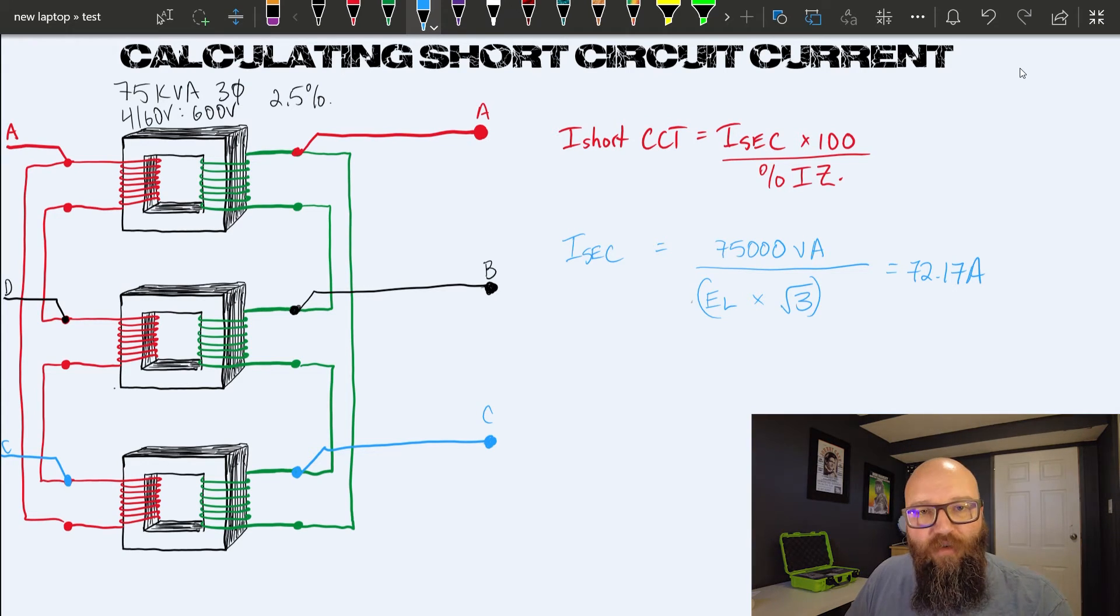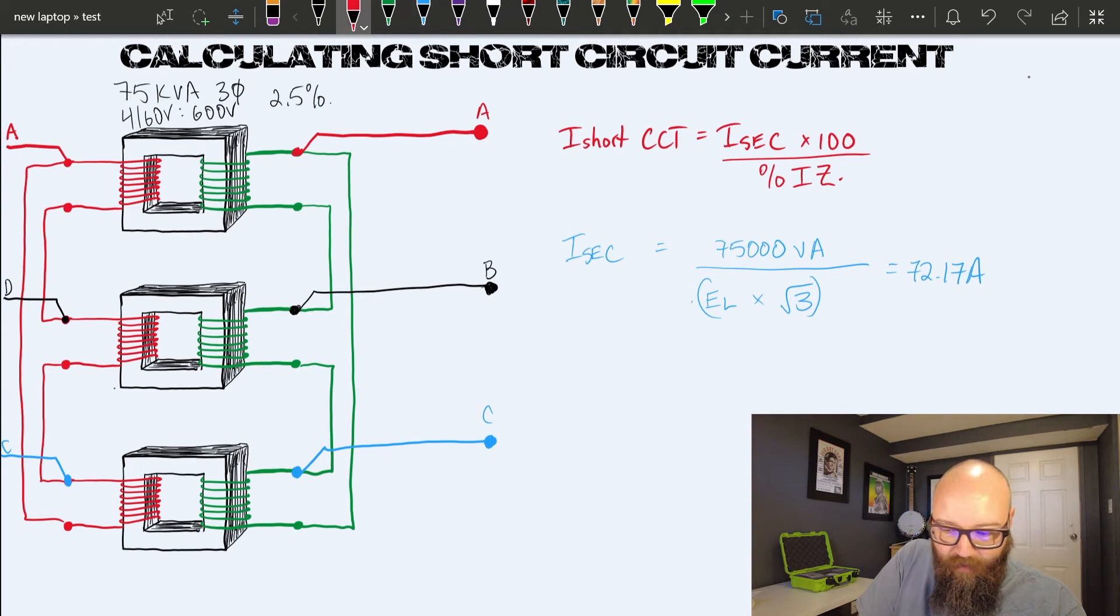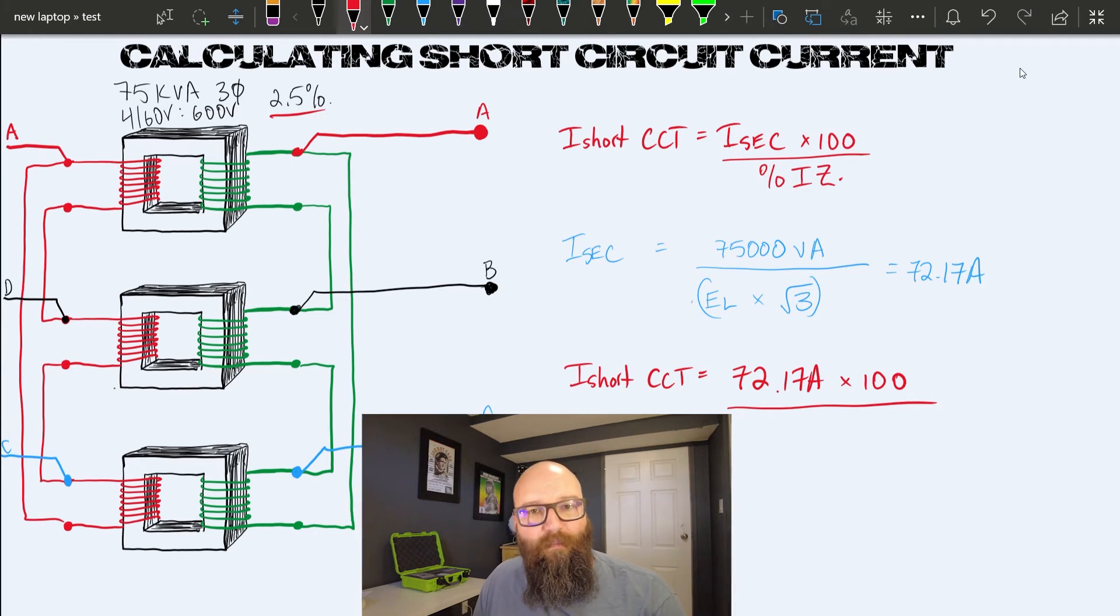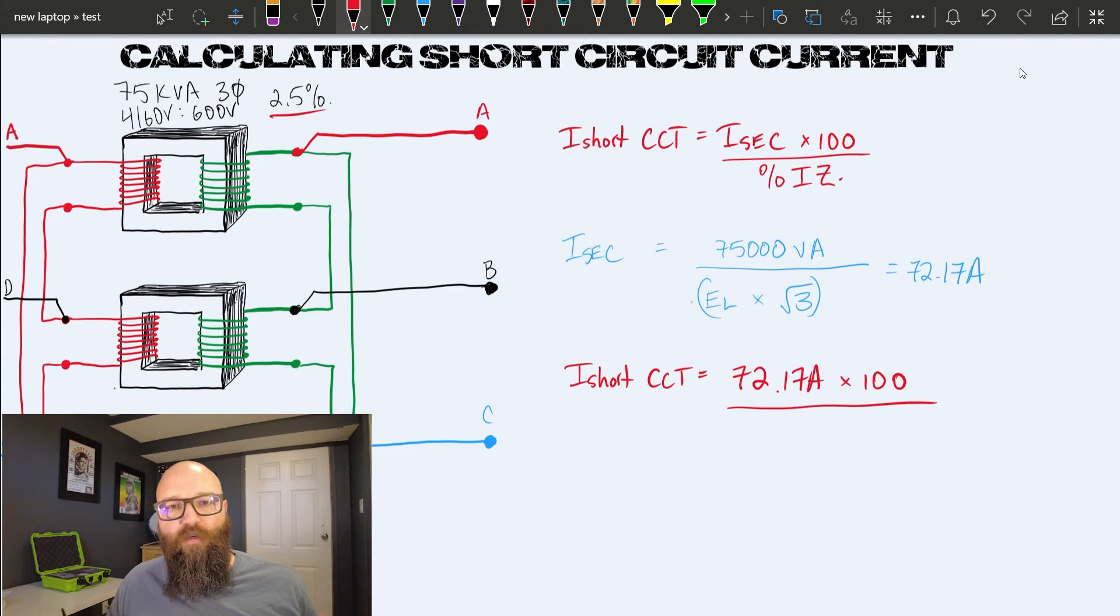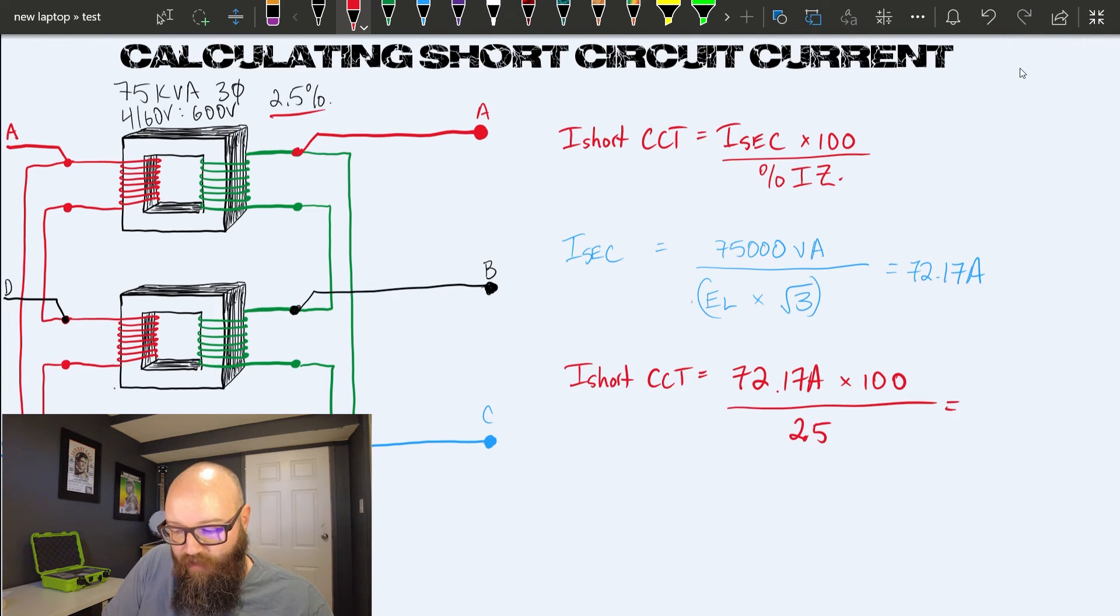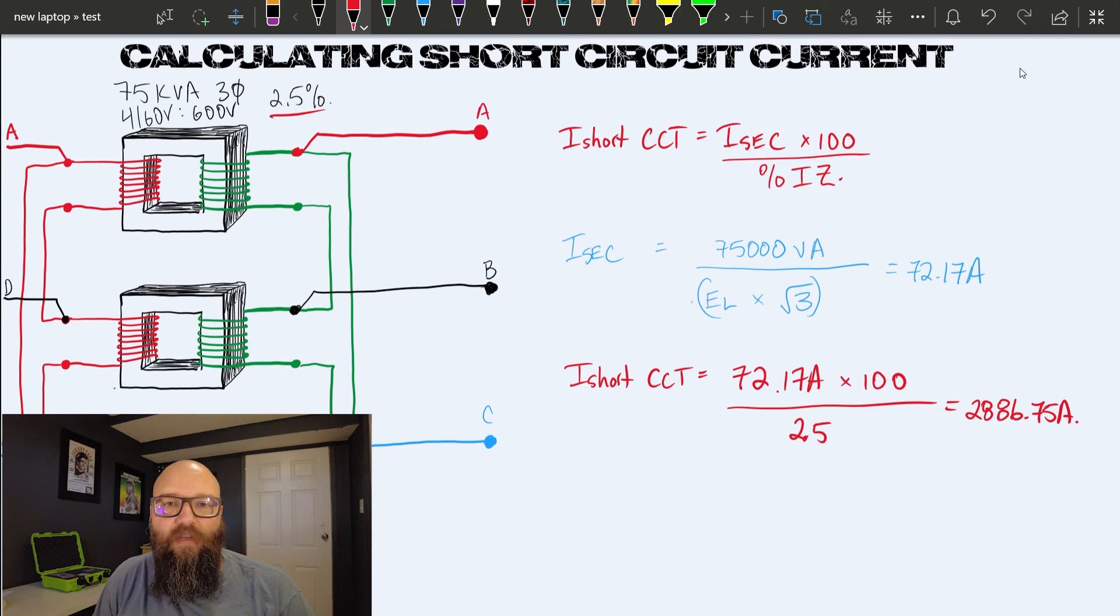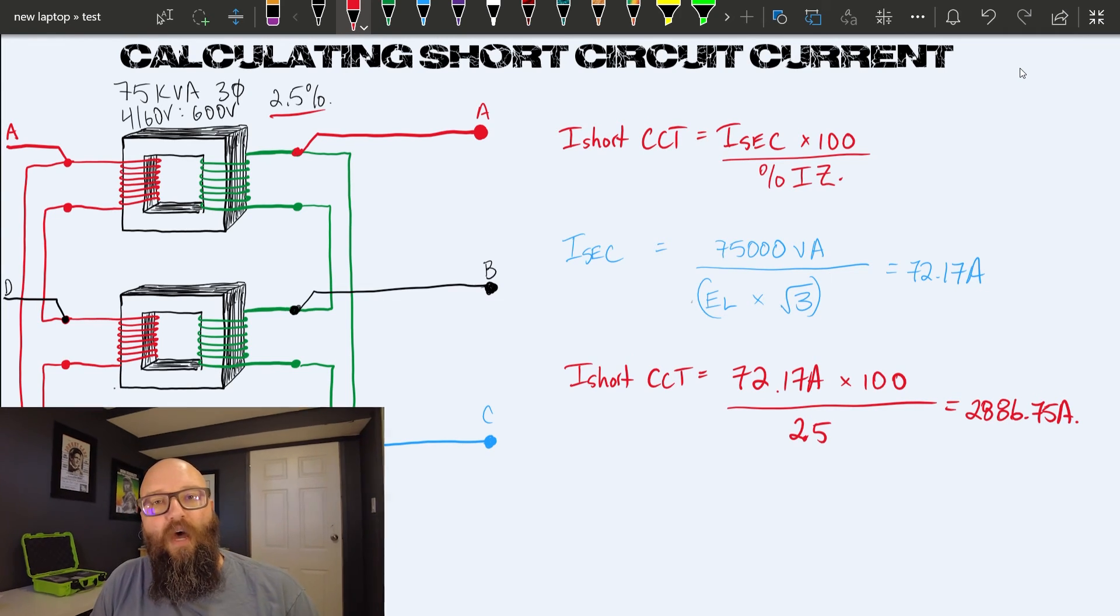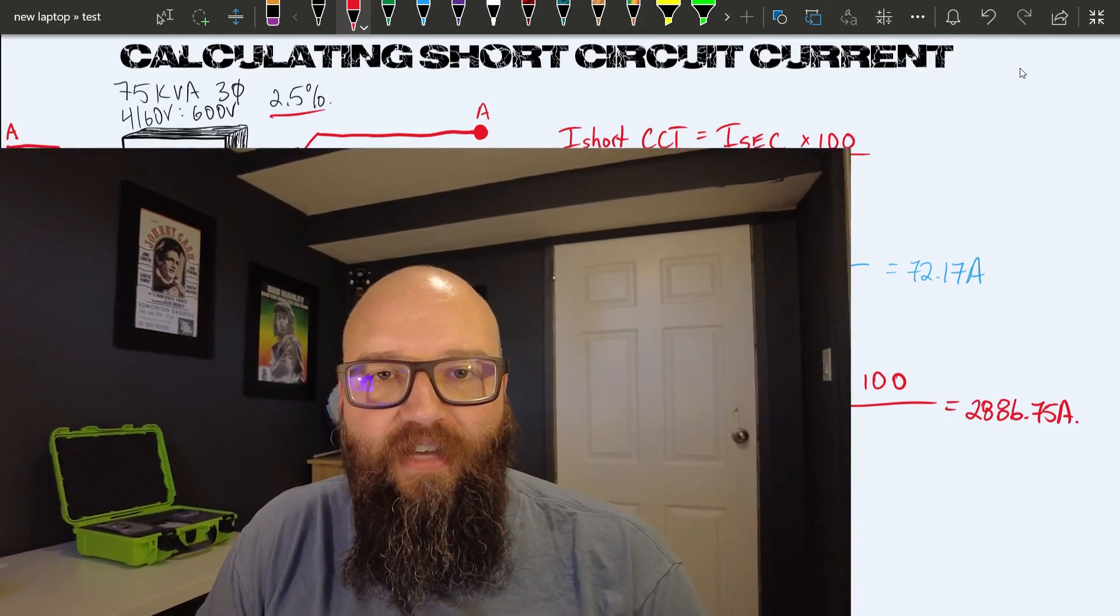We can now substitute those values for variables and run the numbers. I short circuit equals the I secondary, which we calculated to be 72.17 amps, times 100 divided by 2.5—that times 100 already converts it and uses its decimal form. So times 100 divided by 2.5 gives us around 2,886.75 amps. We need to be cognizant of that number when selecting our overcurrent devices, specifically with that interrupting rating in mind. Being that this is very small, a standard 10,000 amp interrupting rating would suffice for this system.